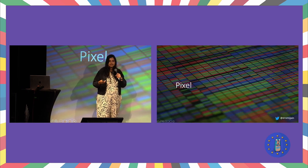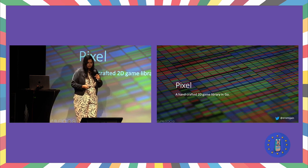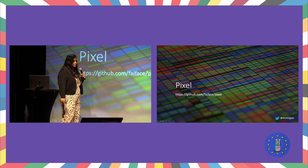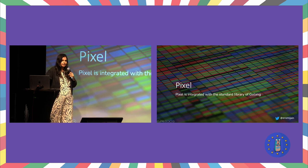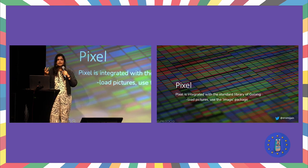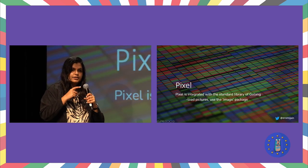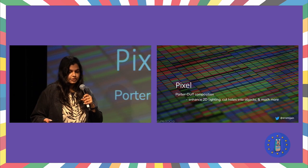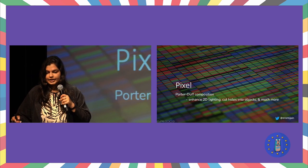The second library is Pixel — another very famous open source library for game development in Go. It is a handcrafted 2D game library in Go. The benefit of Pixel is that it is integrated with the standard library of Go, meaning you can load pictures directly using the image package. If you want to try some game element in your existing code, Pixel would be your go-to choice. It also helps with Porter-Duff composition — enhancing your 2D lighting and cutting holes between images.